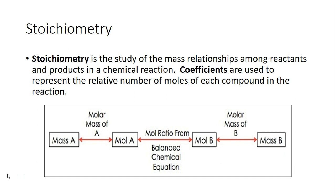In the previous video, we learned that coefficients will tell you moles. And so that's what we're going to be able to use — our mole ratios — to help us figure out the relationship between mass of reactants and mass of products. In the diagram on your notes page, we can see that mass of A is grams — that's our unit.